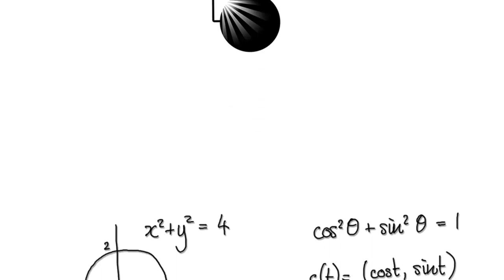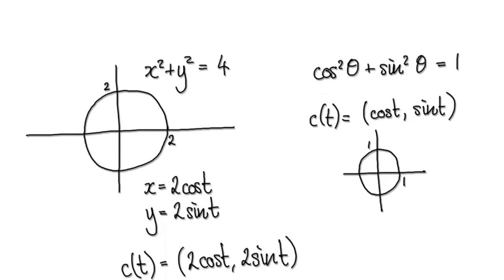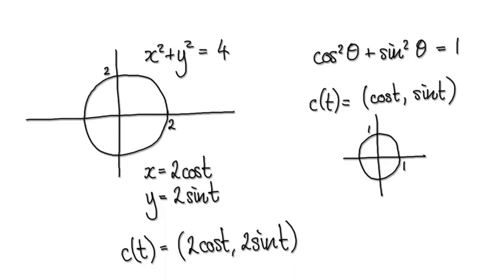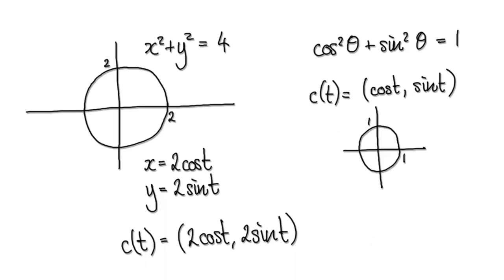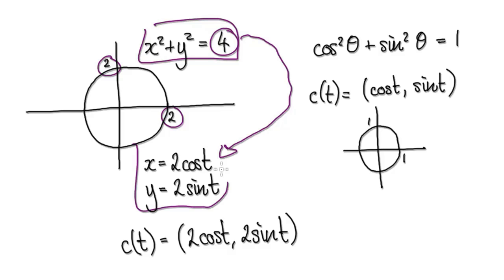In this video, we're going to come up with the parametric equations for the circle and the ellipse. Let's say you've got a circle of radius 2, and our aim is to somehow get the parametric equations for the circle.